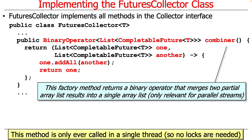The combiner operation would only be used if we were using parallel streams. Even if we do use a parallel stream, we don't have to worry about locks — everything runs correctly using the Java streams framework to handle any required synchronization. Basically, it takes two mutable result containers (ArrayLists) and merges them together so the second one goes at the end of the first. We don't actually use that in our example, but Java expects it.